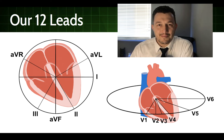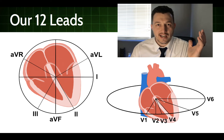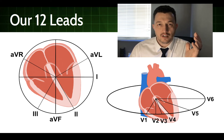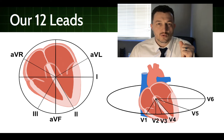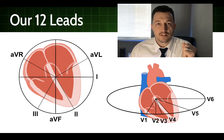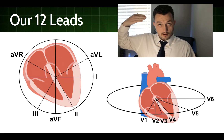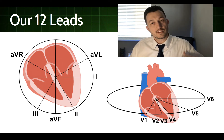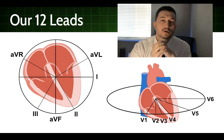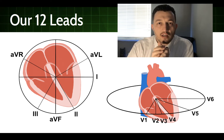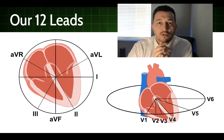Here we have our hexaxial reference system with leads labeled at their angles of orientation alongside our precordial leads. Between the two, we can get a good three-dimensional electrical view of the heart — with the limb leads recording the frontal or coronal plane and the precordial leads recording the horizontal plane. If you remember where each lead records from — its specific angle of orientation — you can put this together and have a solid grasp of the patient's heart as a three-dimensional electrical structure.